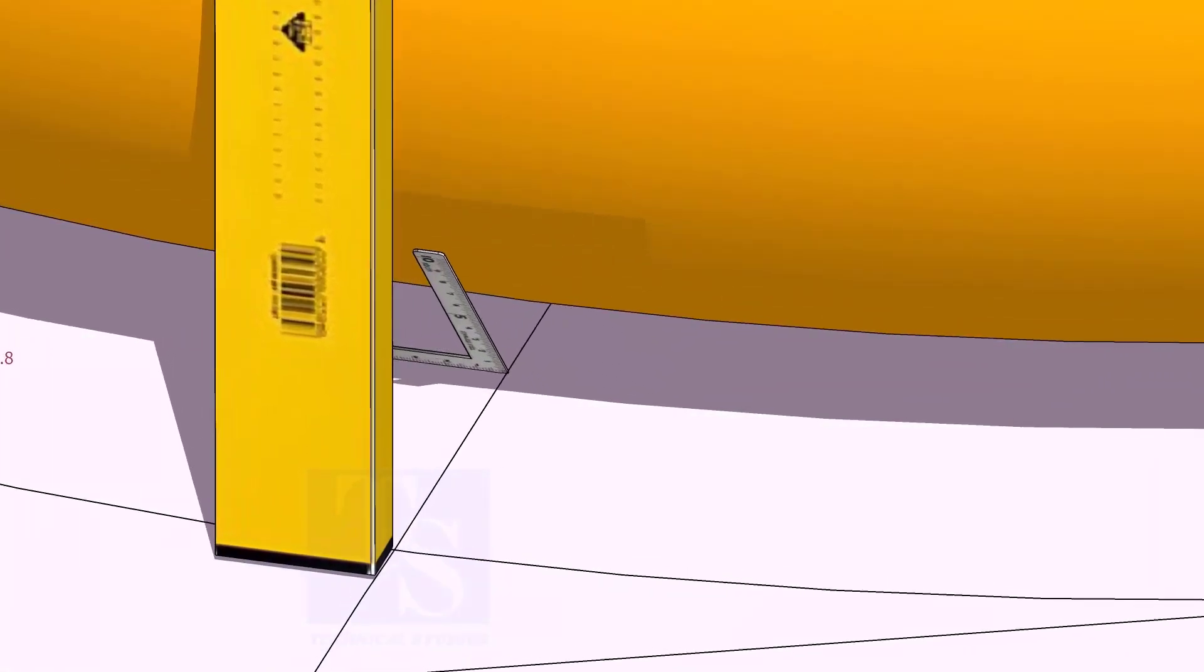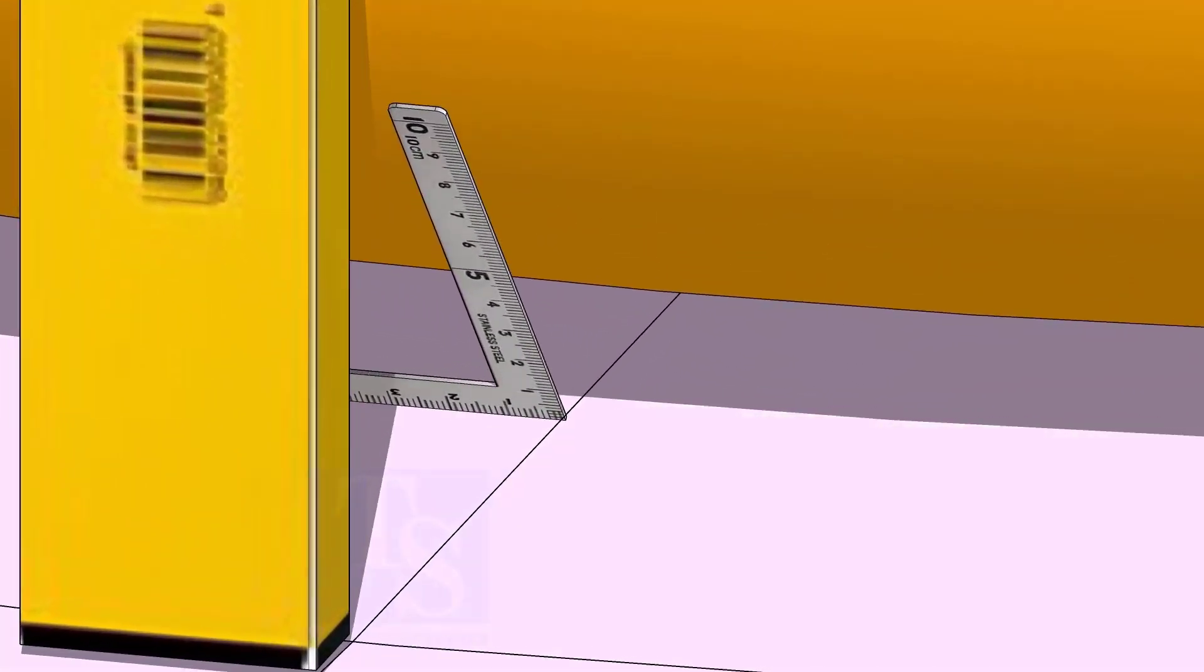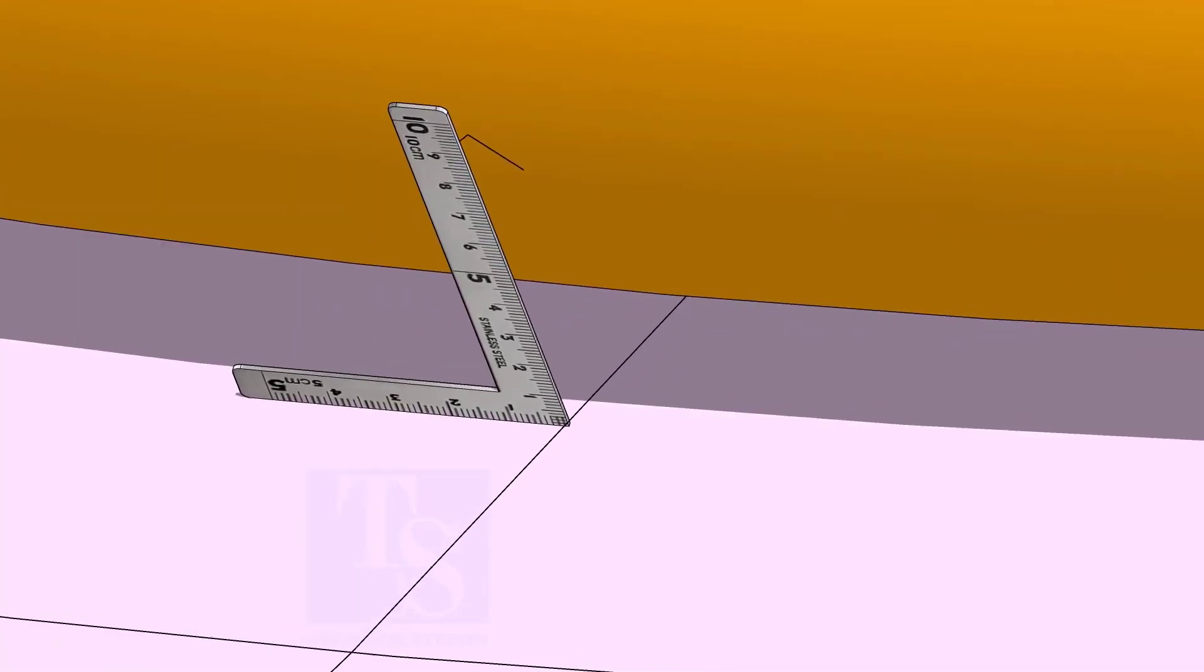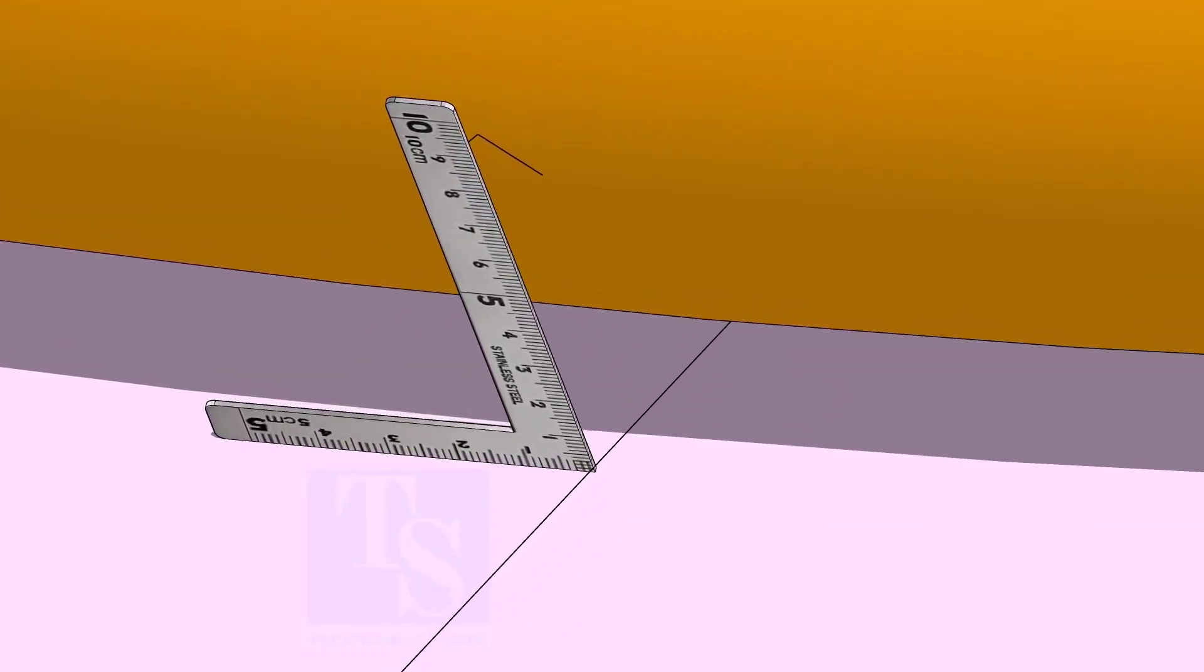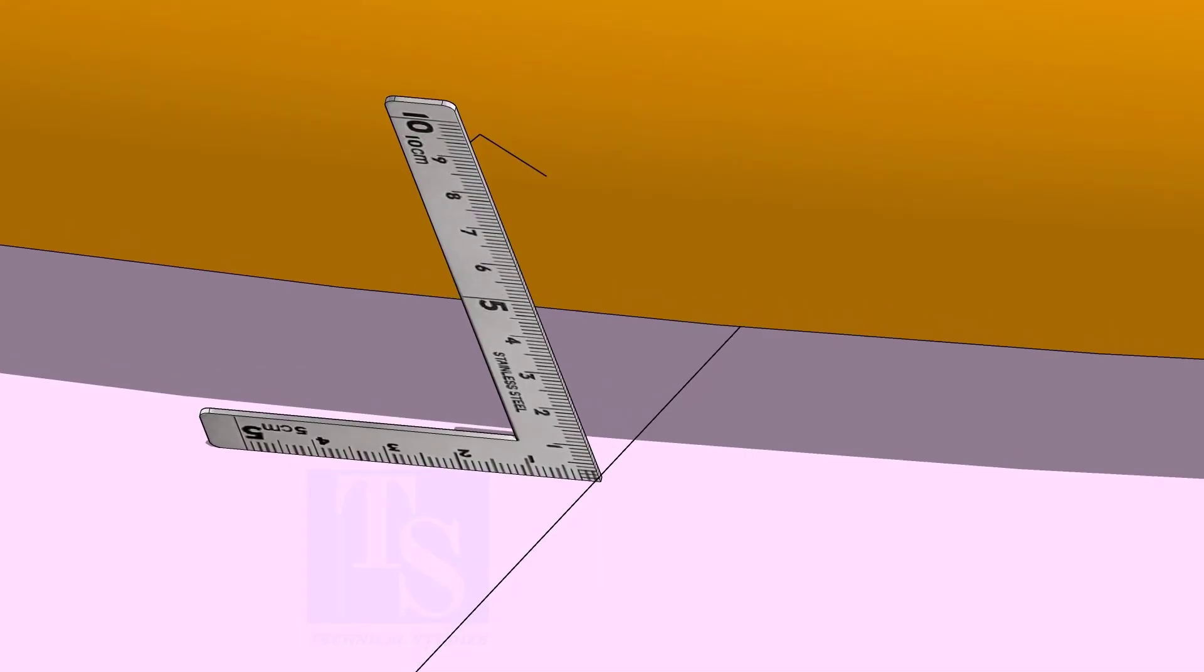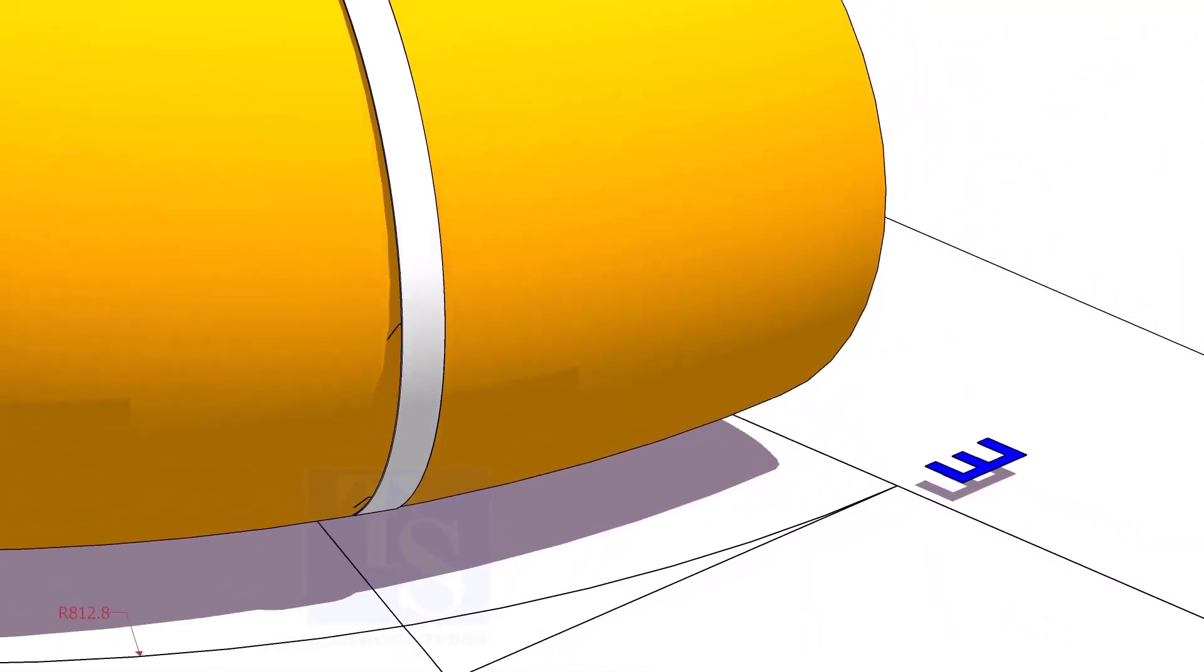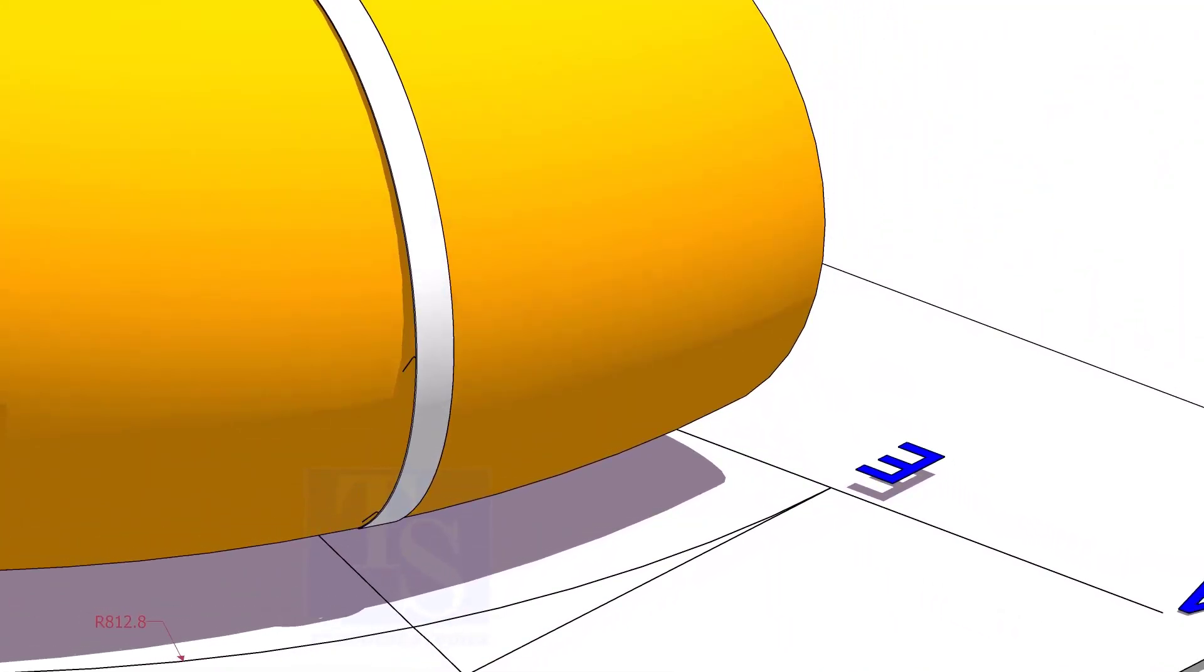At the bottom side, use a small right angle and transfer the line to the elbow on both sides. Use a bend scale and connect the marks to form a circle around the elbow.